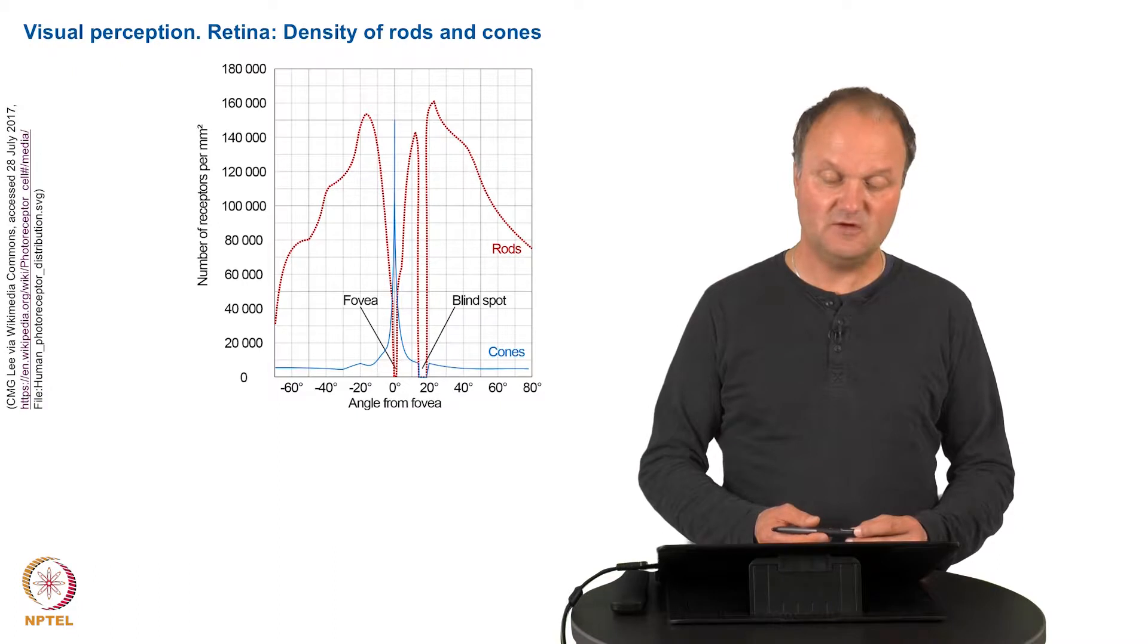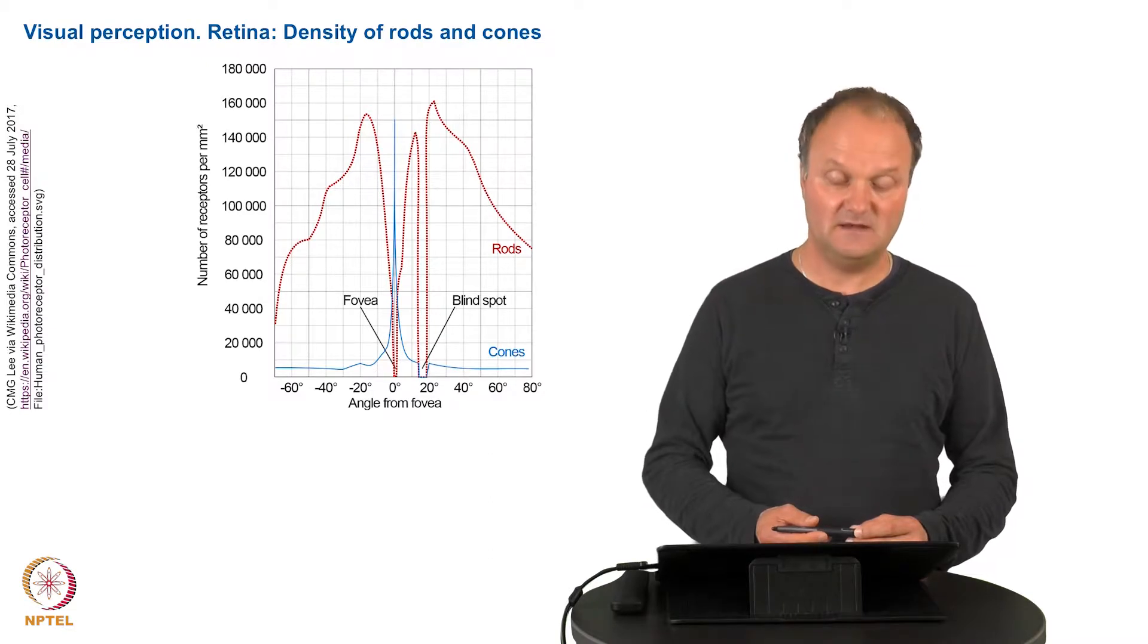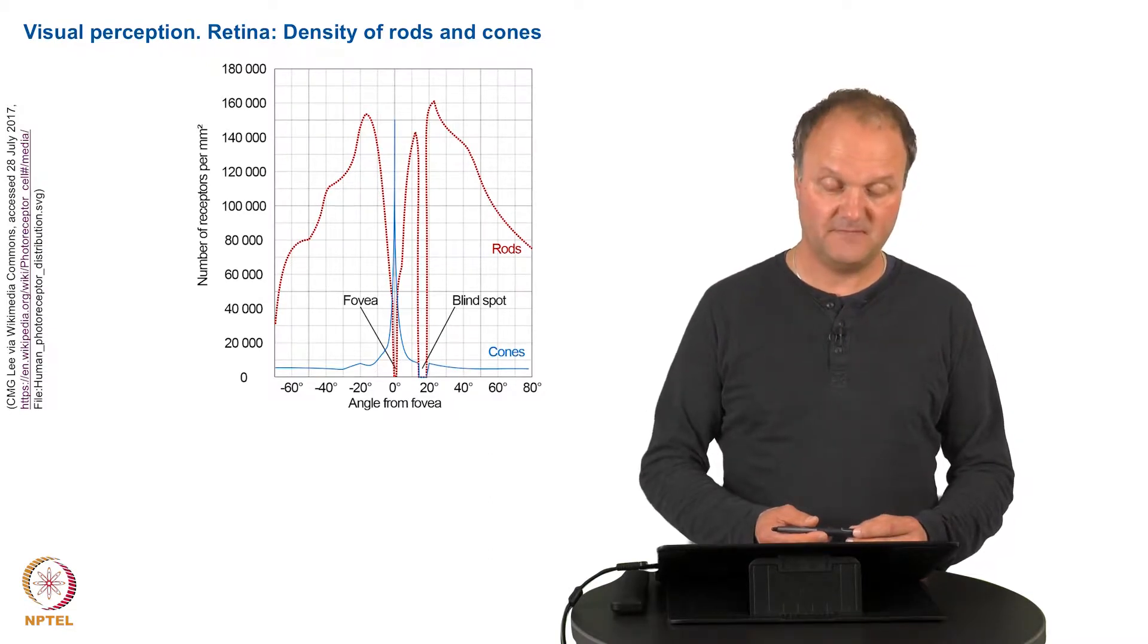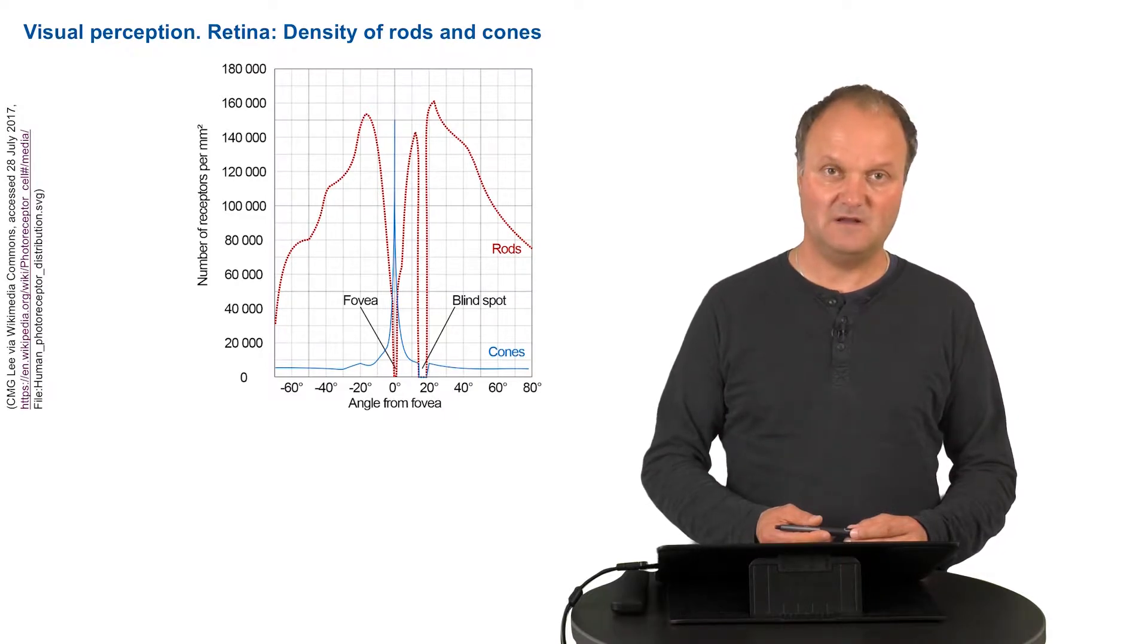The rods are mostly concentrated outside the fovea, whereas the cones are mostly concentrated inside the fovea. This can be seen in the picture behind me and has some implications, especially if you want to watch something with very low light intensity, for example stars.